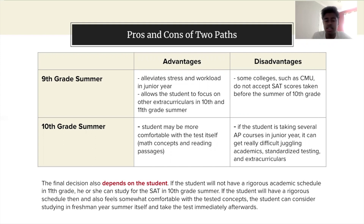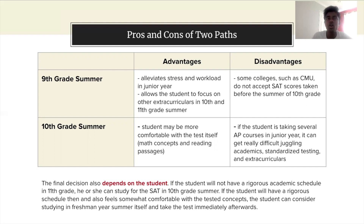The final decision depends on the student. Each student is different and based on their interests and schedule in junior year, their decision will definitely change. Speaking from a personal point of view, I would really recommend the 9th grade summer path — starting that extra year early gives you a lot of leeway in junior year to focus on academics and extracurriculars, since standardized testing can take a lot of time; just one practice test is three or more hours.